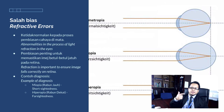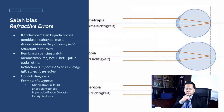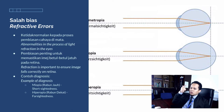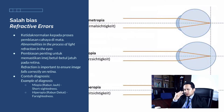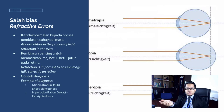Refractive errors involve abnormalities in the process of light refraction in the eyes. When light goes through our eyes, it is refracted by the lens. As shown in the picture, with normal sight the light falls correctly at the back of the eyeball. But if something is wrong with the optic lens or the shape of the eyeball, light will be refracted either shorter or behind the eyes, resulting in short-sightedness or far-sightedness.